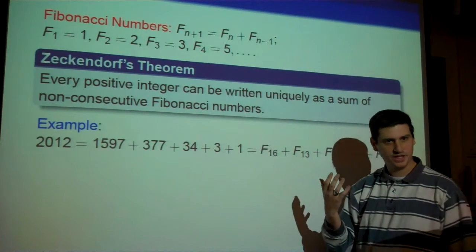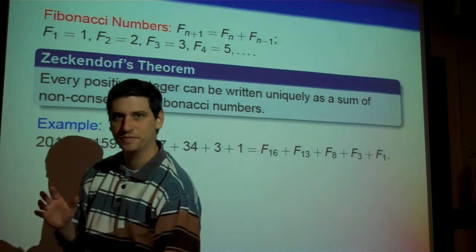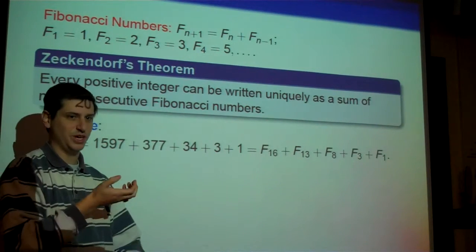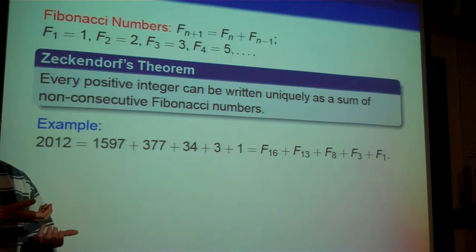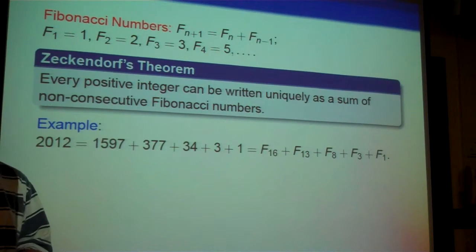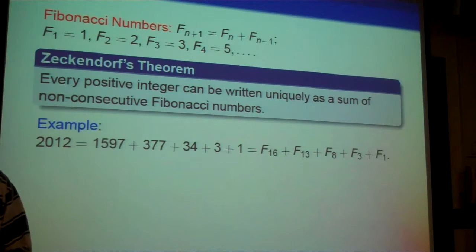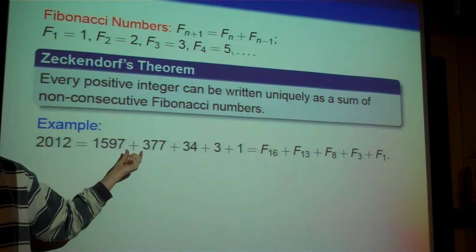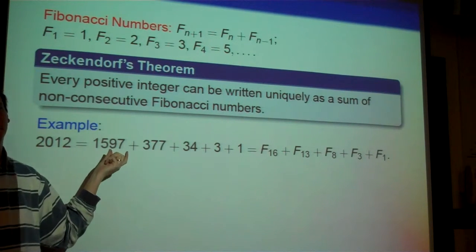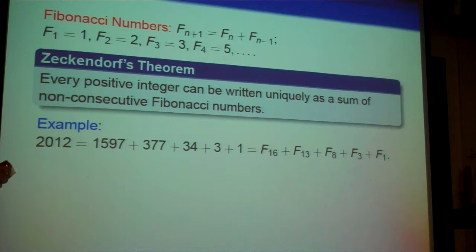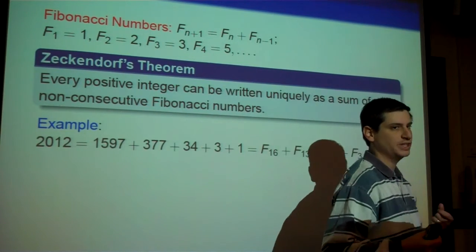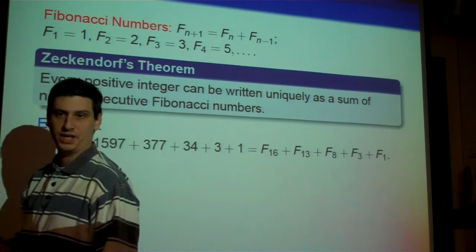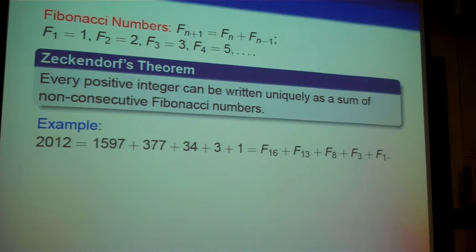Here's the simple proof of Zeckendorf: take a positive integer, subtract the largest Fibonacci number you can, and look at what's left over. Subtract the largest Fibonacci number you can from that. If those two numbers were adjacent, you could have subtracted their sum, which is a Fibonacci number — violating the maximality of what you subtracted. This proves every number has a decomposition, but it doesn't prove uniqueness. If you get bored, try to prove that two different non-adjacent decompositions of the same number must be the same.